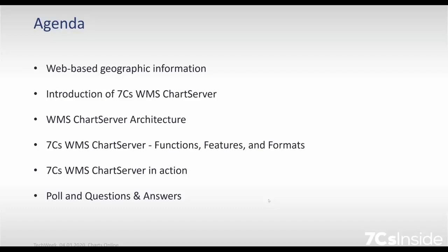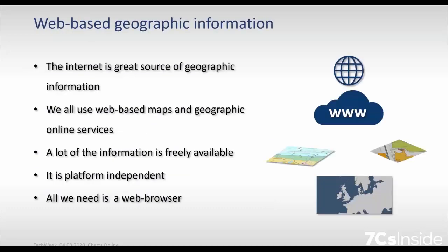Web-based geographic information: the internet is a great source for geographic information. We all use web-based maps and geographic online services — everybody's using Google Earth, Google Maps, OpenStreetMap, OpenSeaMap, and so on. A lot of this information is freely available, which is really great, and it's also platform-independent. This means it doesn't matter if we want to use it on a desktop computer, on our smartphone, or our tablet — all we need is a web browser.